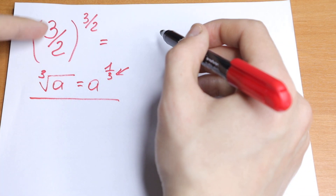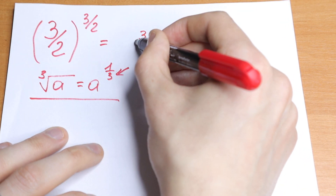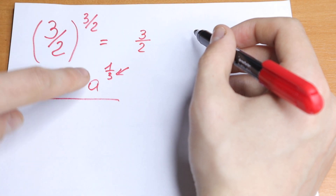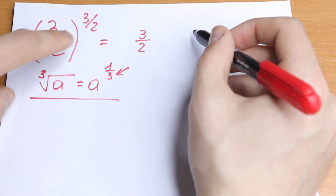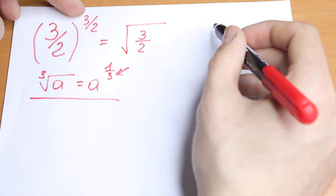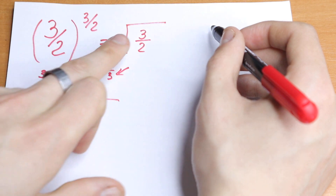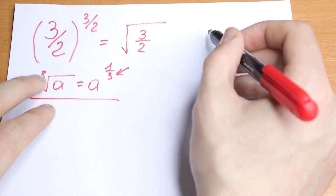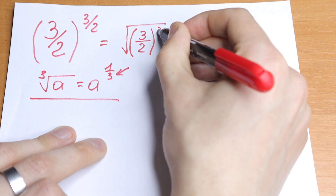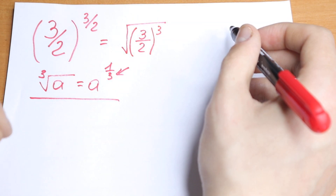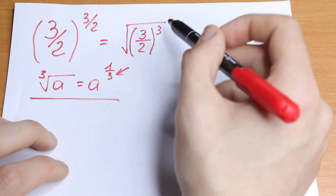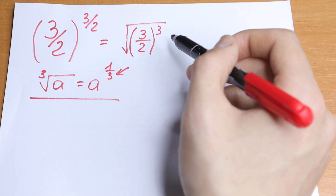What we will have? This is our a — 3.5. So we have 3.5. Take a look: this number signals us about the power of a root, so we have 2, so we have square root. And this cube signals us about the power of this a, so we will have 3.5 to the power cube. So we will write this 3.5 to the power 3.5 as a square root of 3.5 to the third power.